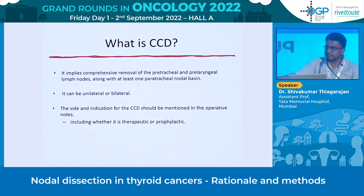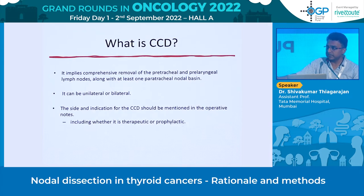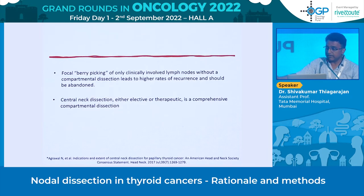Central compartment dissection implies comprehensive removal of pre-tracheal and pre-laryngeal lymph nodes along with at least one paratracheal nodal basin, and can be done bilaterally. The side and indication should be specifically mentioned in operative notes because local recurrence is the main problem in differentiated thyroid cancers. Focal berry-picking of only clinically involved nodes without compartmental dissection leads to higher recurrence rates and should be abandoned — it must be a proper, comprehensive central compartment dissection.